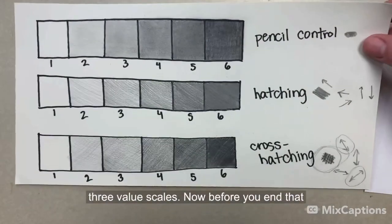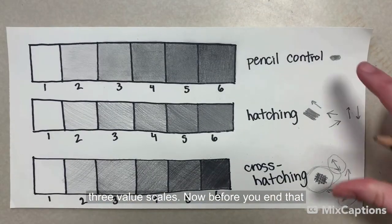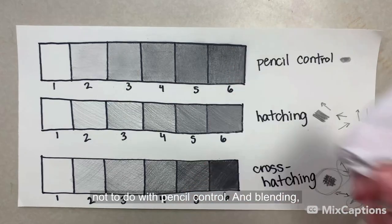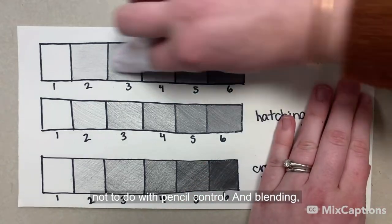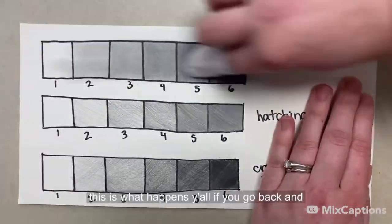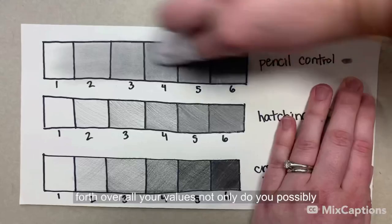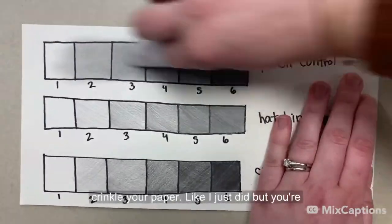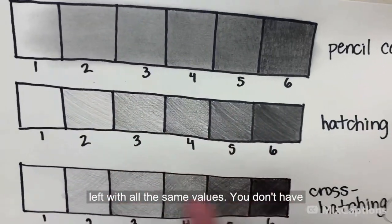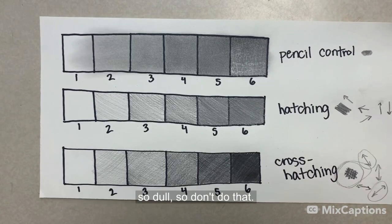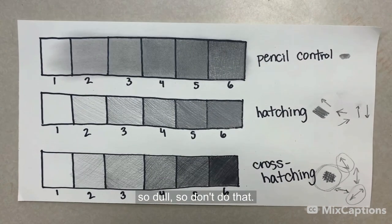And those are our three value scales. Now, before you end that video, I'm going to show you one of the things not to do with pencil control and blending. This is what happens, y'all, if you go back and forth over all your values. Not only do you possibly crinkle your paper like I just did, but you're left with all the same values. You don't have that wide range anymore and it makes your artwork so dull. So don't do that.